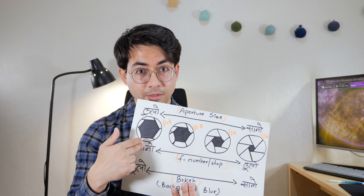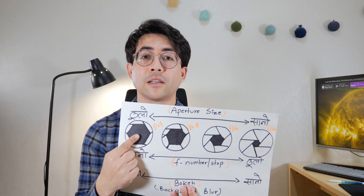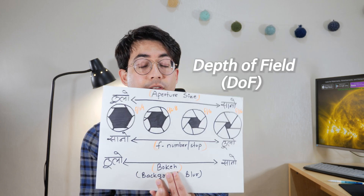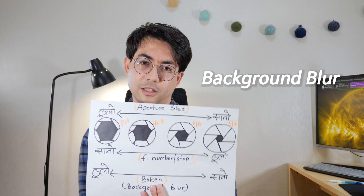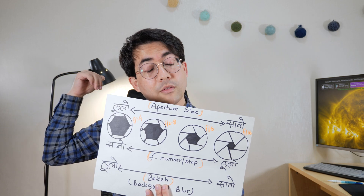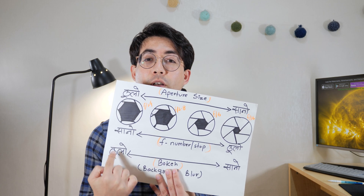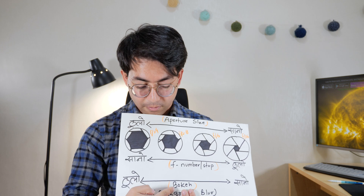So what does the aperture size actually do? The aperture is very important for your image. It controls the depth of field — a wide aperture gives you very good background blur, as you can see here.